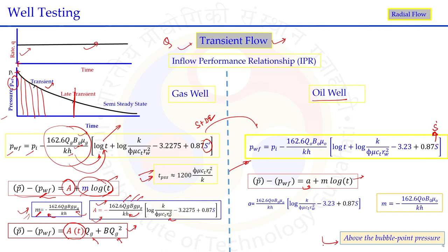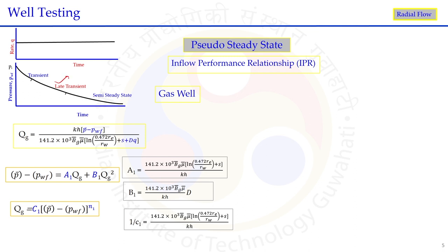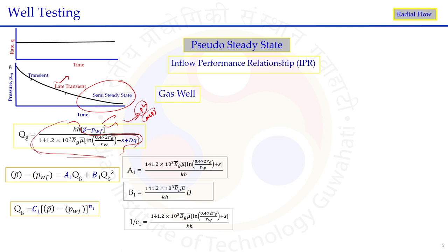Once the transient period has passed and we are in the semi-steady state, we call this the deliverability test. For the gas well in pressure form, we can write it in P-square or pseudo-pressure form as well. The equation for Q_g under pseudo steady state conditions includes the non-Darcy factor, unlike the transient case which only had the skin factor. This equation is only for the pseudo steady state condition — meaning stabilized flow rate is achieved and pressure changes at a constant rate with time.